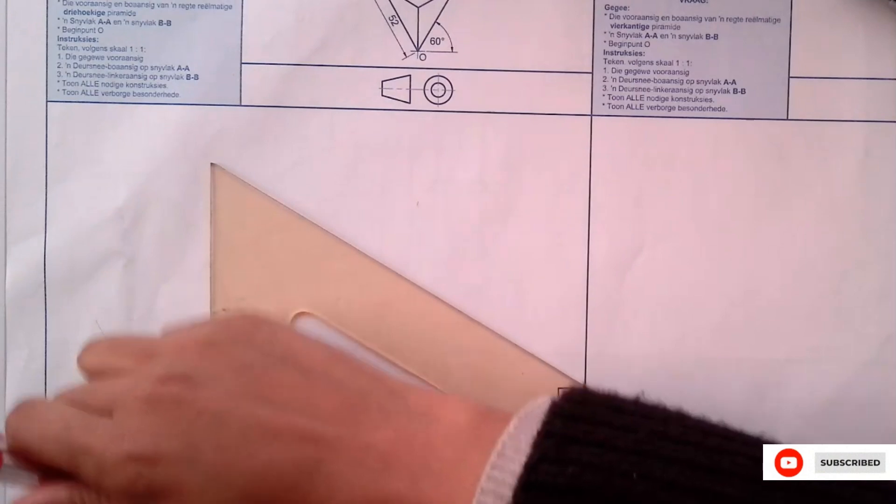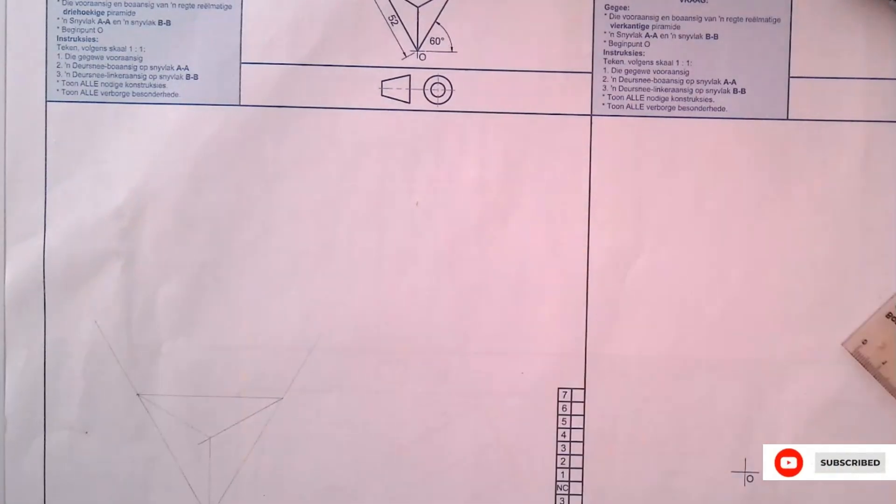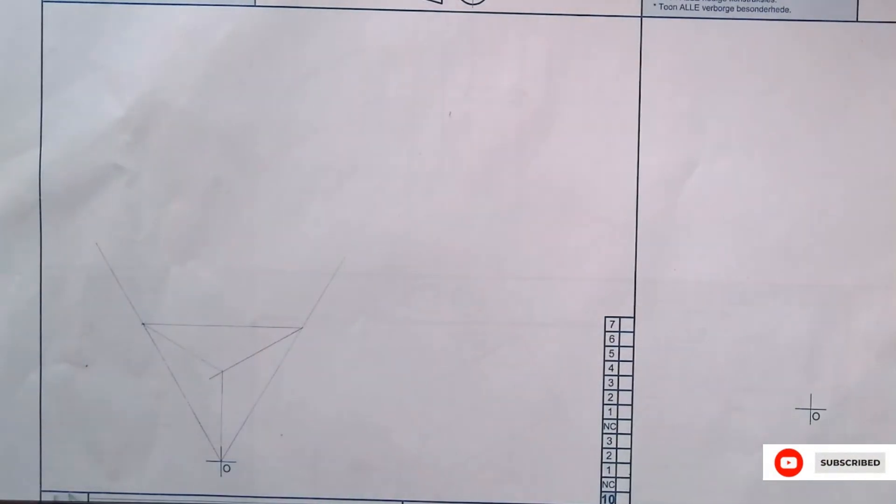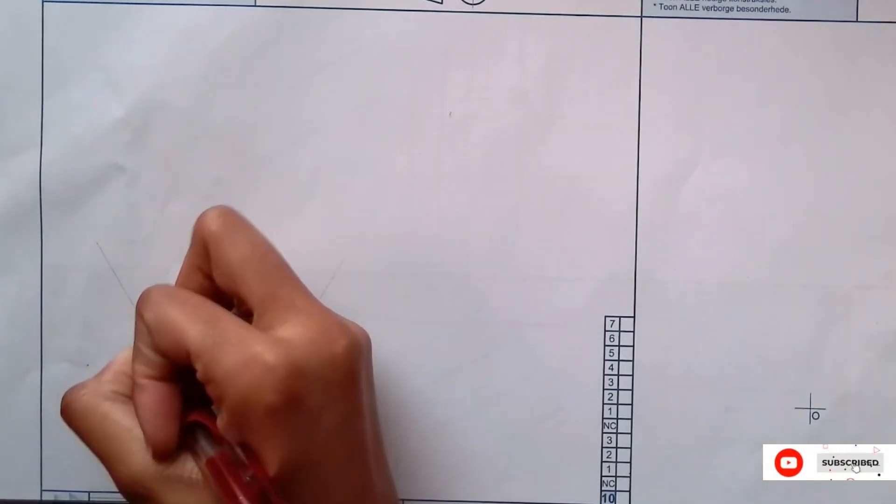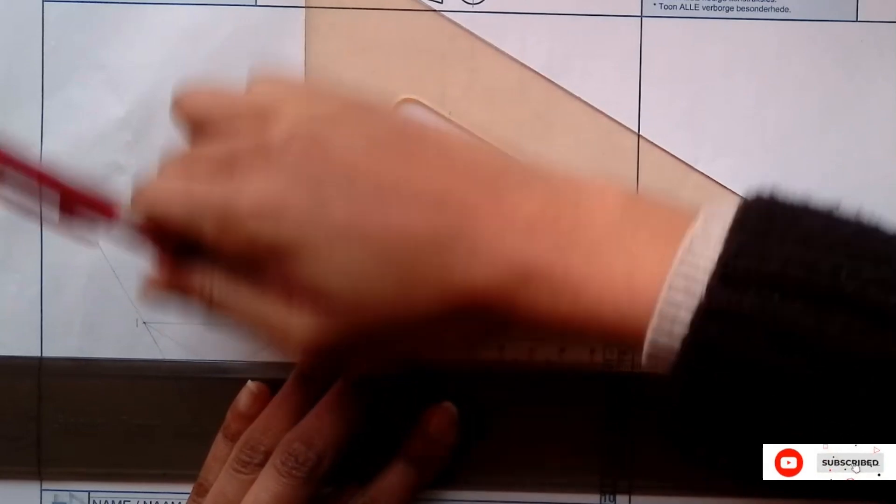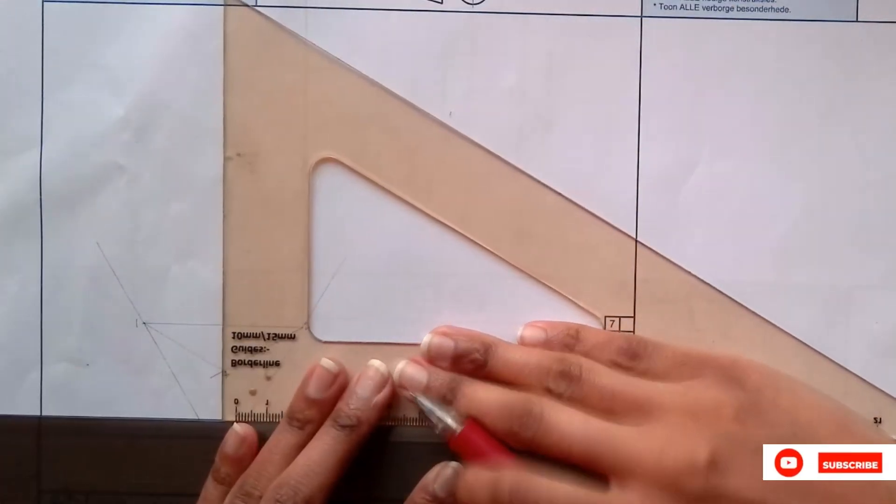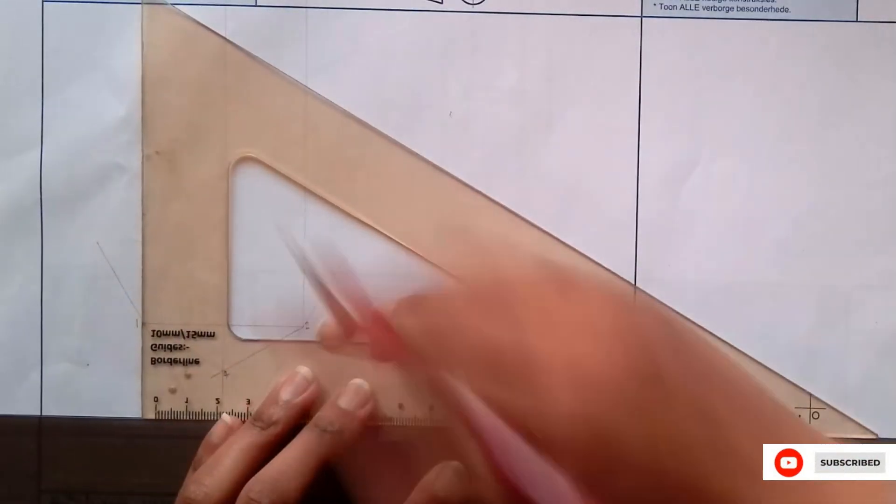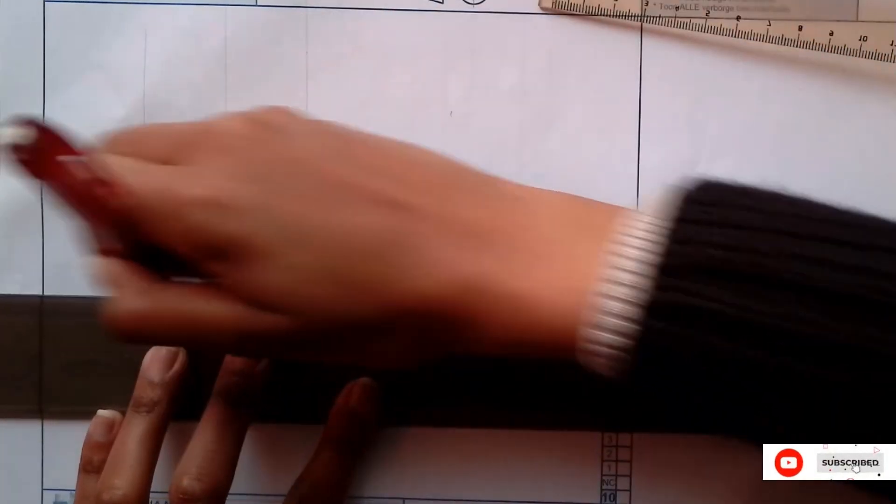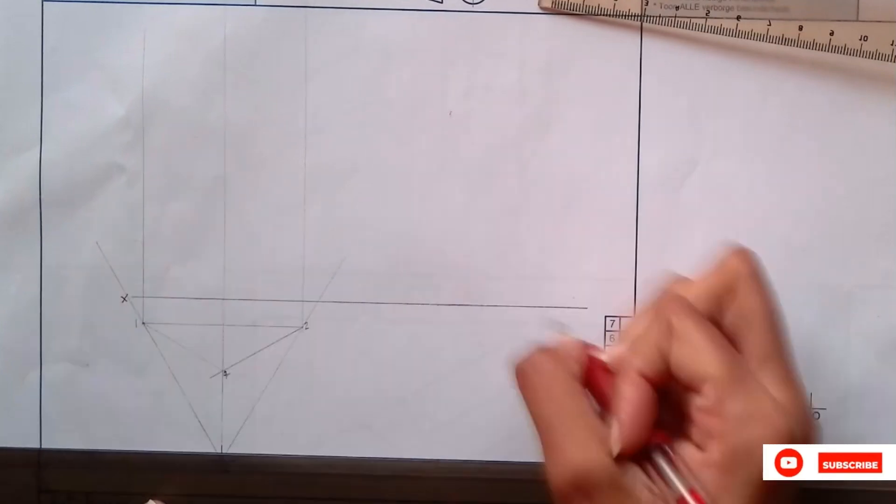Then I'm going to have a straight line joining them there like that. Once you have that, I'm going to label one, two, three, and four in the middle. Then I'm going to project it up. Get my XY line about 10 millimeters away and label it XY.